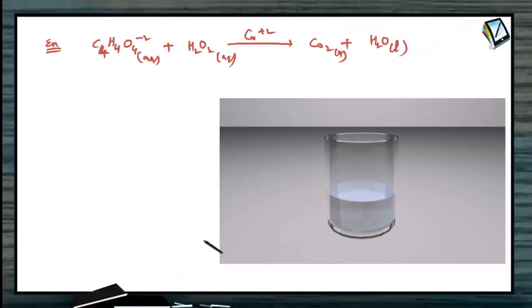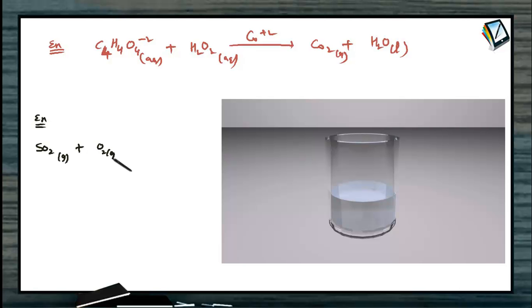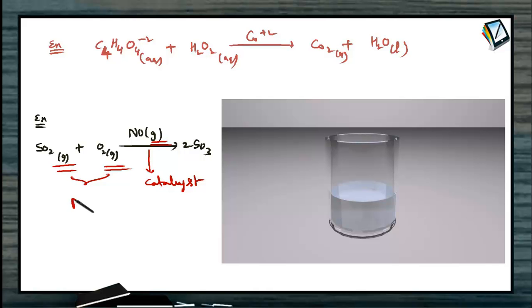Another example of homogeneous catalysis: formation of sulfur trioxide by oxidation of sulfur dioxide. Sulfur dioxide (gas) plus oxygen (gas) forms 2 moles of sulfur trioxide (gas). The catalyst is nitrous oxide (NO), which is also a gas. Since all reactants and the catalyst are present as gases, this is homogeneous catalysis.